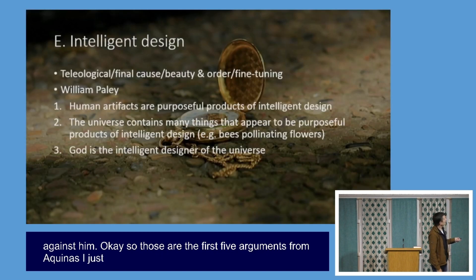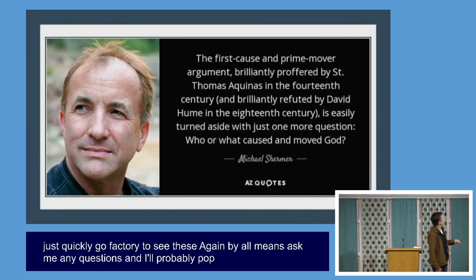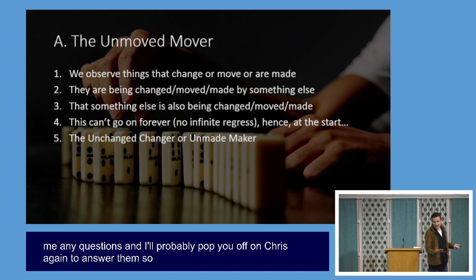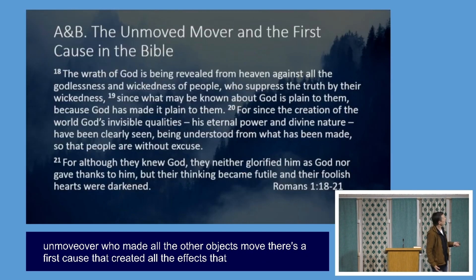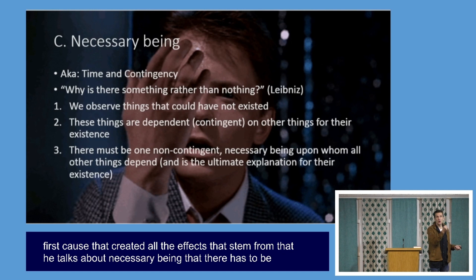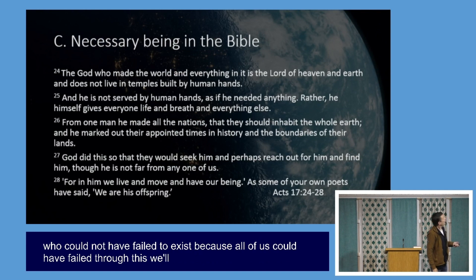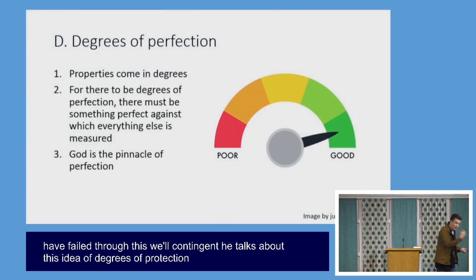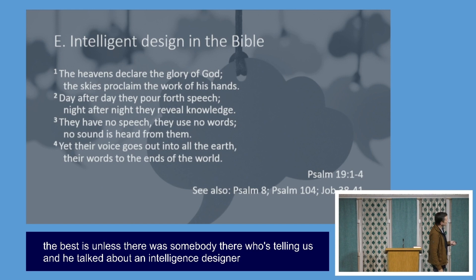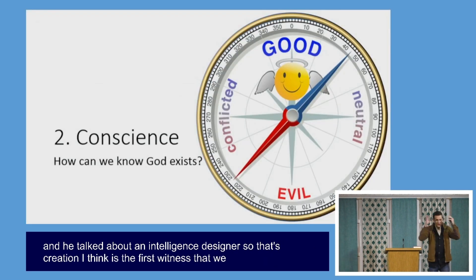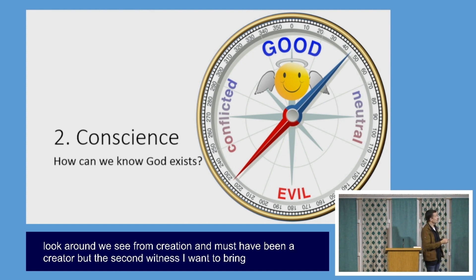So those are Aquinas's five arguments. To recap: an unmoved mover who made all other objects move; a first cause that created all the effects; a necessary being who could not have failed to exist, while all of us could have; degrees of perfection — how would we know what's best unless someone was telling us; and an intelligent designer. That's creation. Now the second witness is conscience.